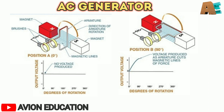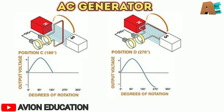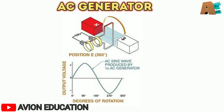So the induced voltage in position two is maximum. In position three, the armature is again parallel to the magnetic lines of force, cutting a minimum number of lines of force, so the induced voltage is minimum. In position four, the armature is perpendicular again, cutting maximum lines of force, so the induced voltage is maximum. In position five, the armature is parallel, so no EMF is induced.